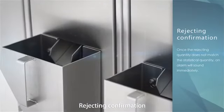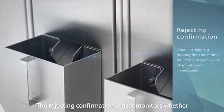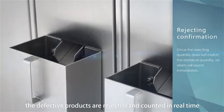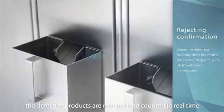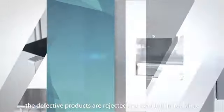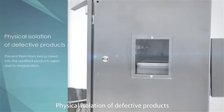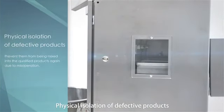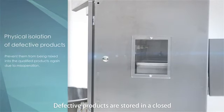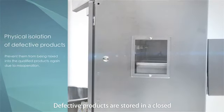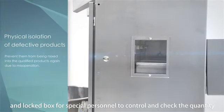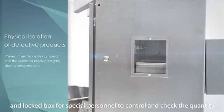Rejecting Confirmation. The rejecting confirmation sensor monitors whether the defective products are rejected and counted in real-time. Physical Isolation of Defective Products. Defective products are stored in a closed and locked box for special personnel to control and check the quantity.